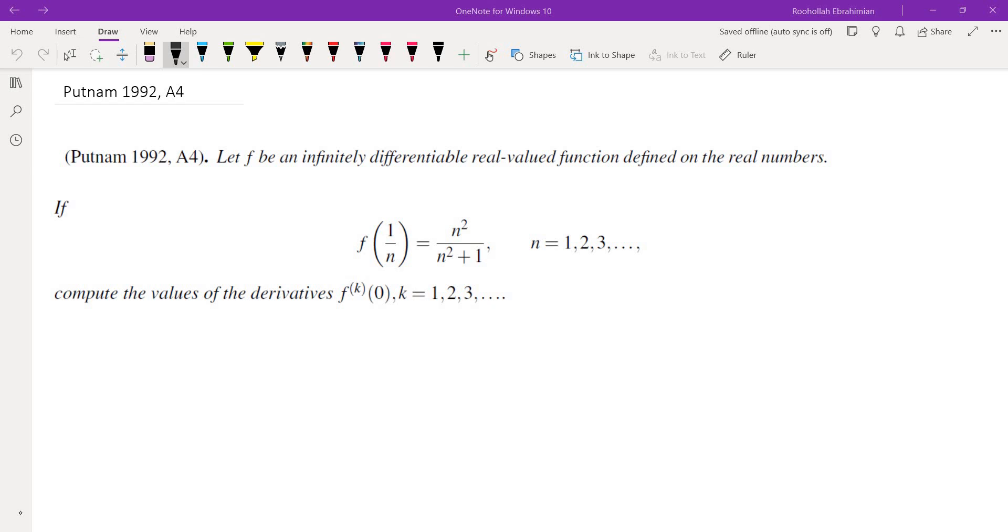Hello, in this video we're going to go over problem A4 from 1992 Putnam. The problem is asking us to find k derivatives of a function at 0 where some relation for the function is given.